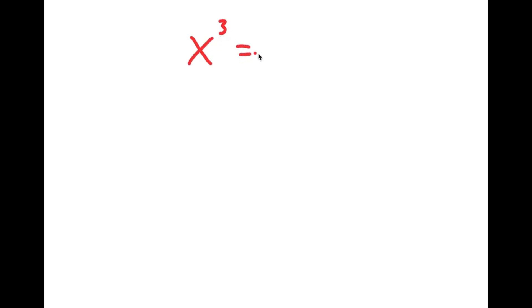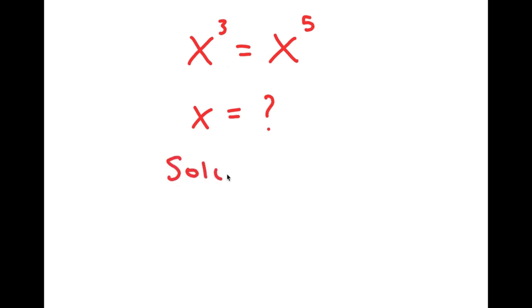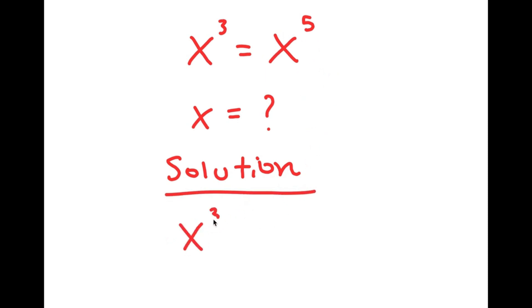In this video, I'm going to be solving the equation x to the power of 3 is equal to x to the power of 5. My only variable in this equation is x, so that's what I'm going to be solving for. I'm going to rewrite my equation down here so I have a little more solving space. So, my equation: x to the power of 3 is equal to x to the power of 5.